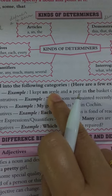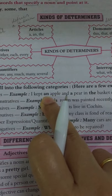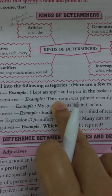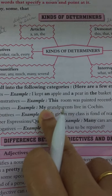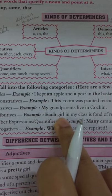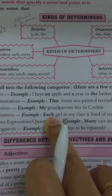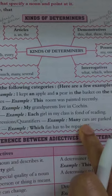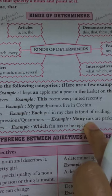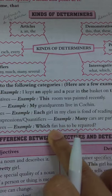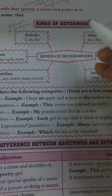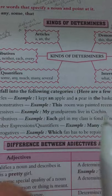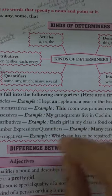In each example: 'an' comes before apple, 'this' comes before room, 'my' comes before grandparents, 'each' comes before girl, 'many' comes before cars, 'which' comes before fan. A determiner will always come before a noun.